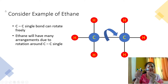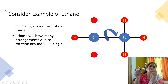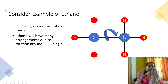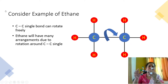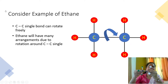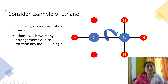This is a ball and stick model of ethane. As you can see, this carbon is attached to 3 hydrogens, and the second carbon is also attached to 3 hydrogens, and there is one carbon-carbon single bond. Now, this carbon-carbon single bond can rotate freely, and due to this rotation, this molecule will attain various arrangements in space.